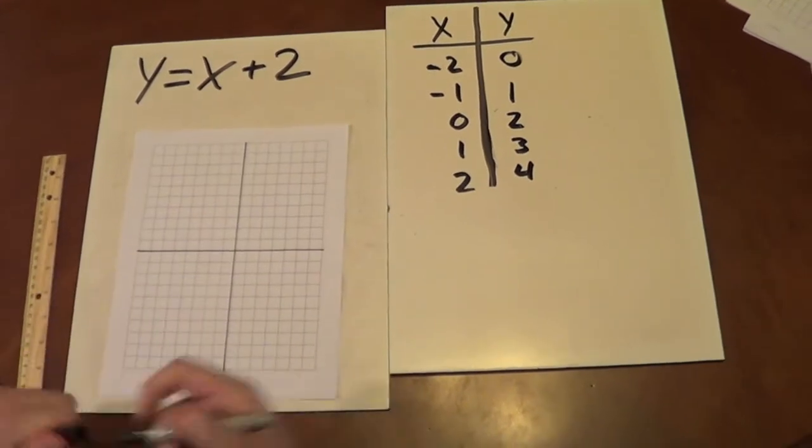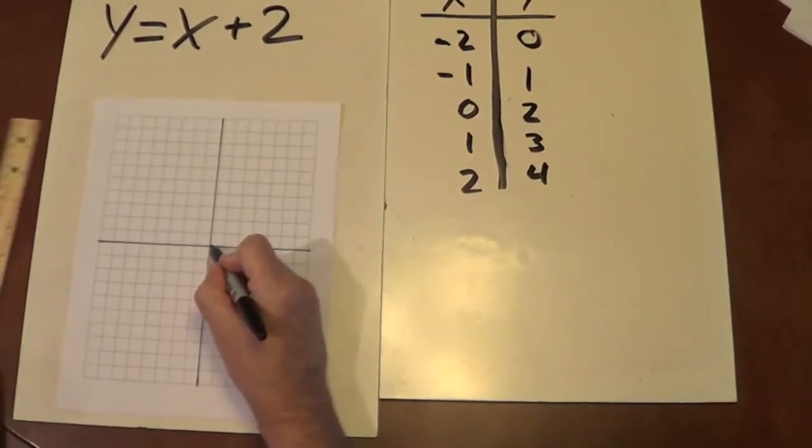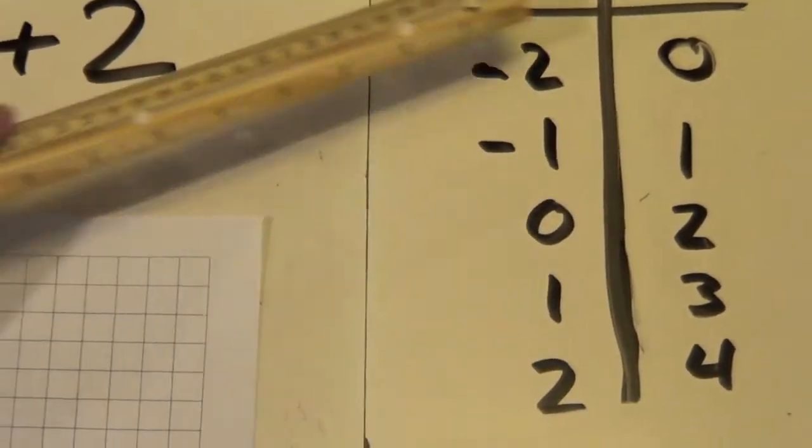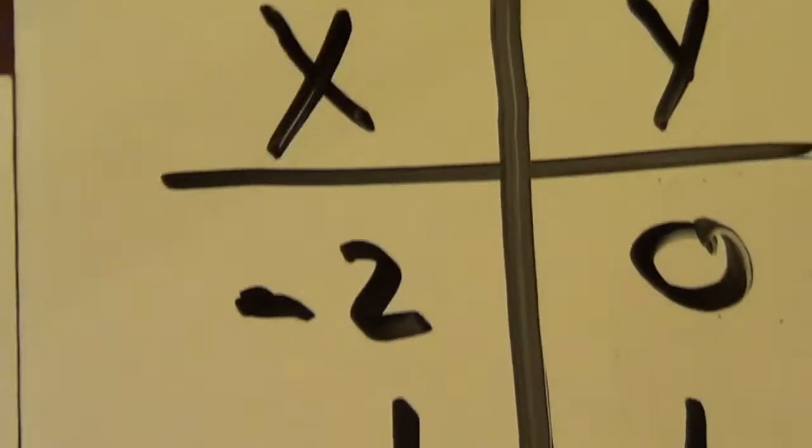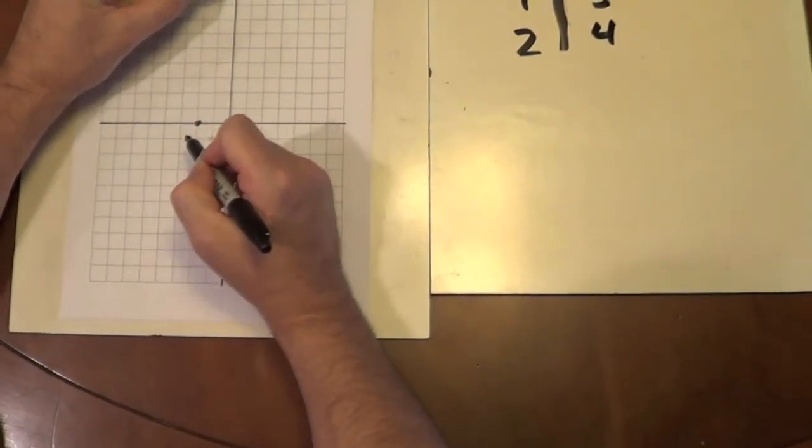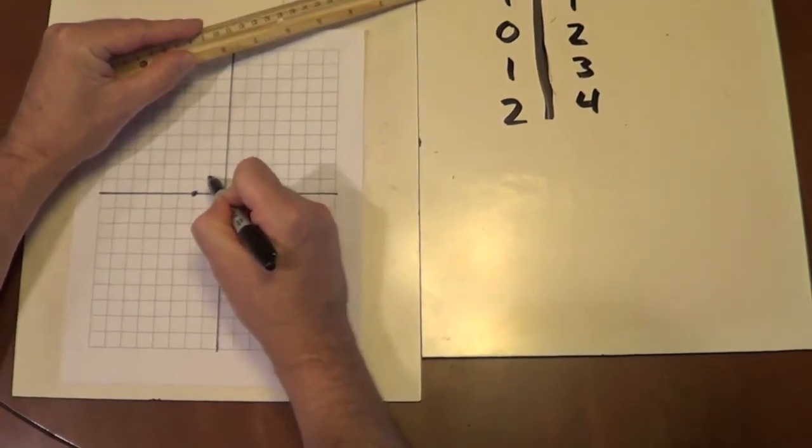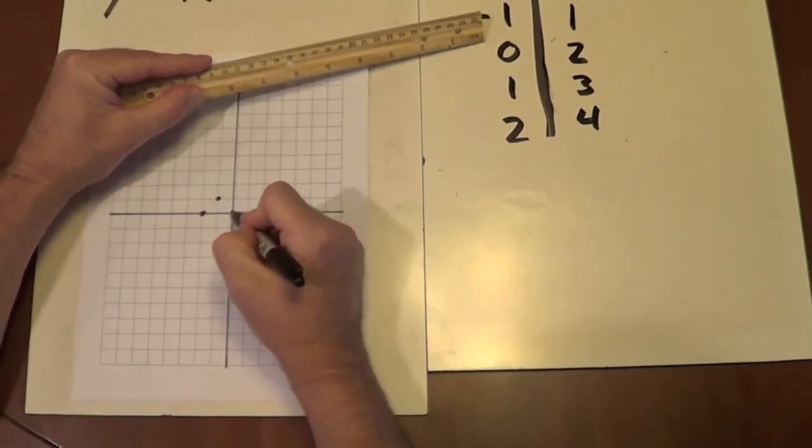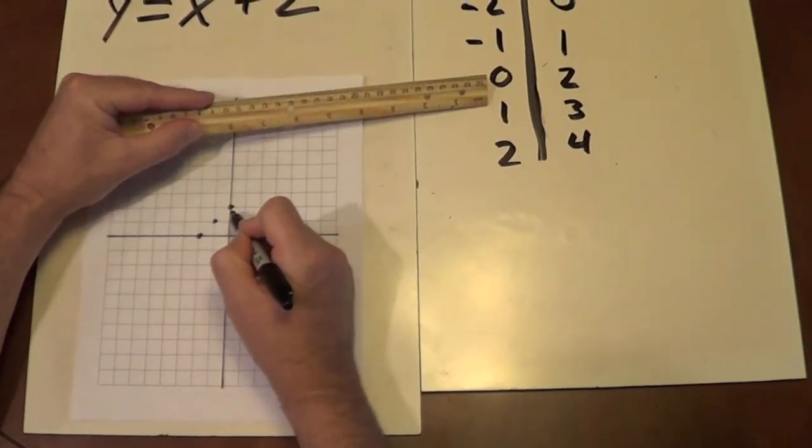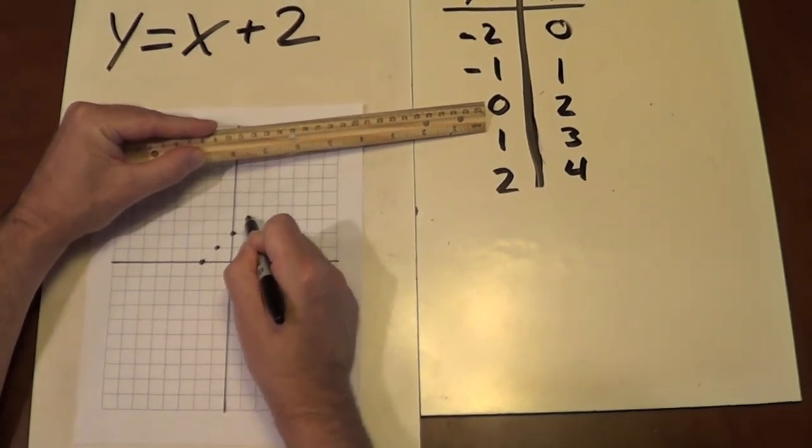So we always start at our origin. We find our x value first. In this case, our x value is negative 2. And then we're going to stay at 0 because y is 0. Now, second point, x is negative 1. And y is 1. x is 0, y is 2. x is 1, y is 3.